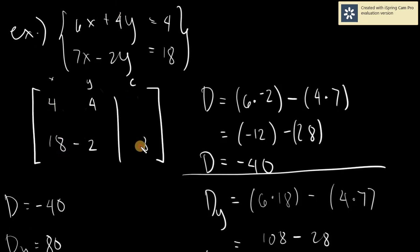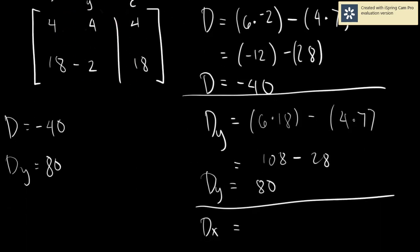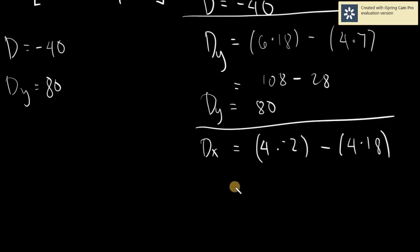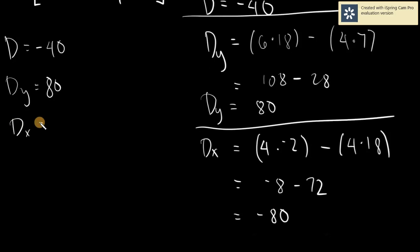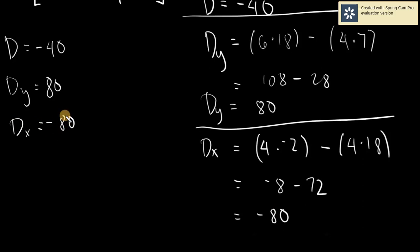This is for x only — x is what we are replacing. So cross multiplying: 4 times negative 2 gives negative 8, minus 4 times 18 gives 72. So negative 8 minus 72 gives us negative 80. Our D sub x is equal to negative 80.